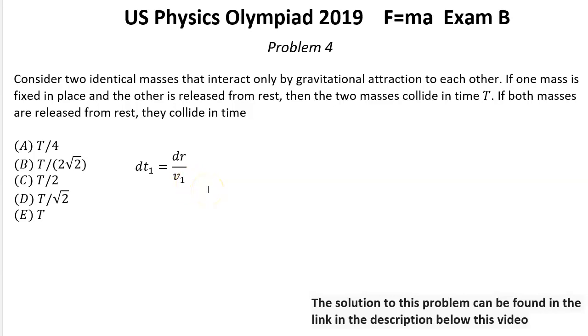where dr is a distance covered by one mass and v1 is the speed of this mass in this particular point.